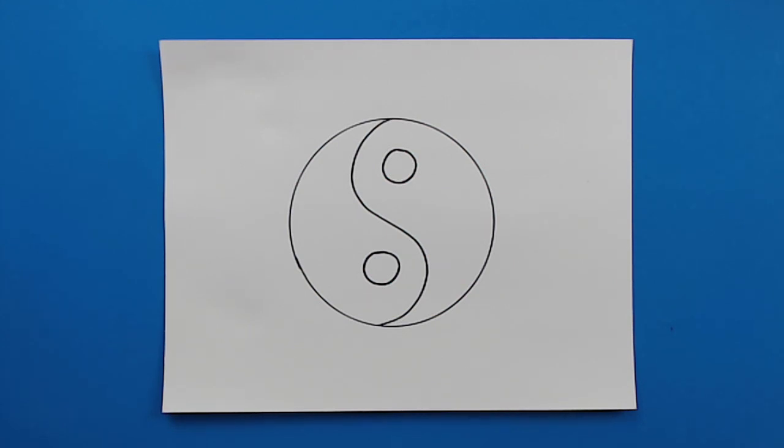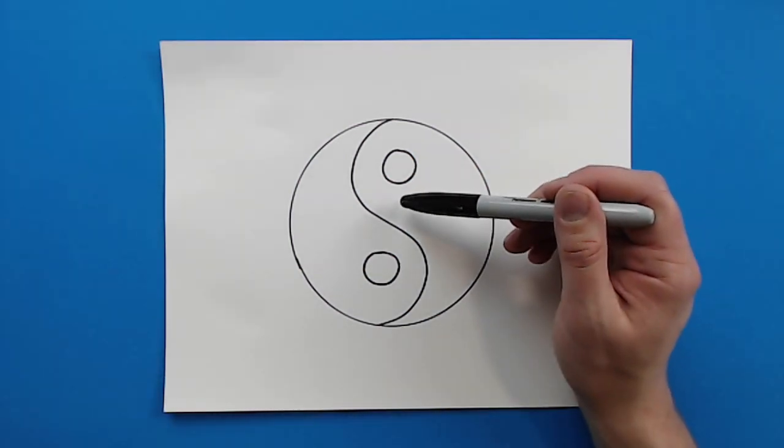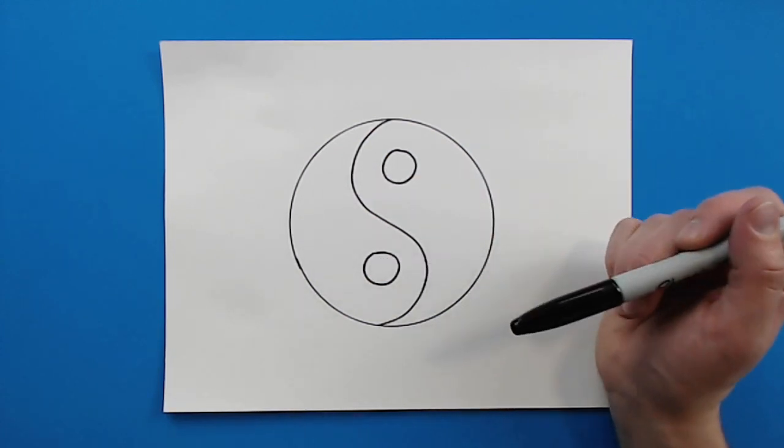When you color these, you can do any sort of color combination. The most traditional is definitely the black and white, where you would have white here at the black dot and then black here at the white dot.